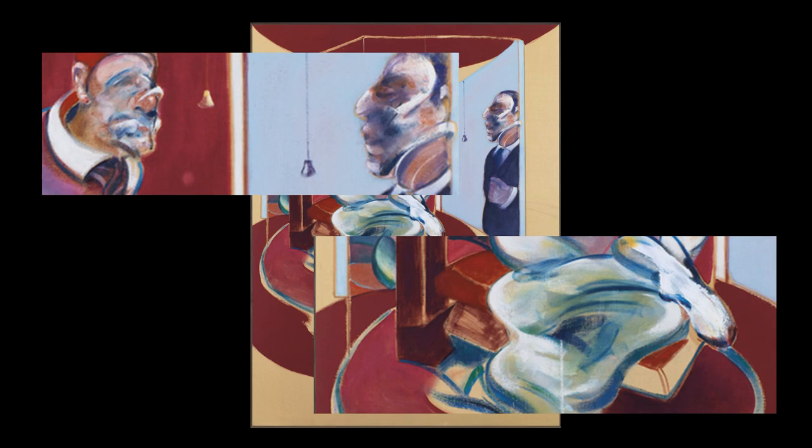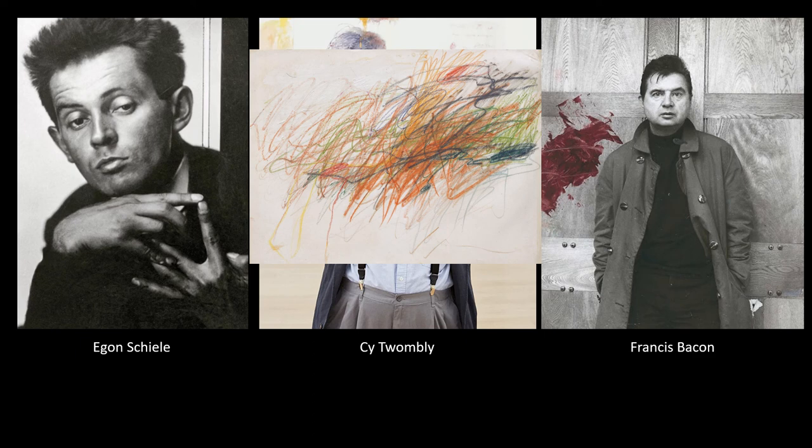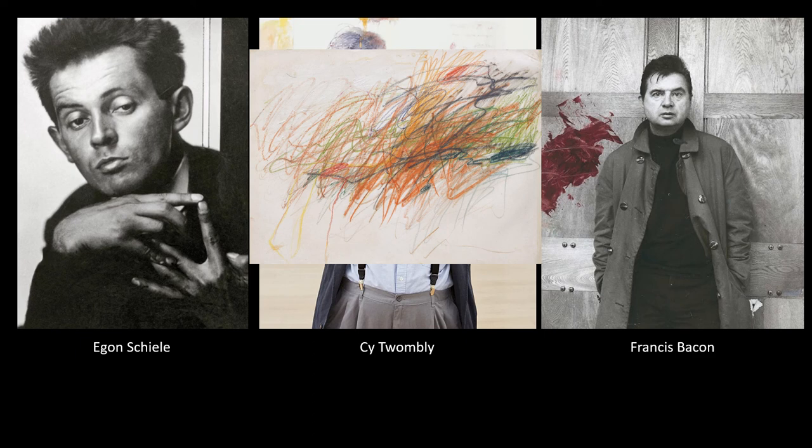Francis Bacon also layers his paint to build up depth to his characters. So, what have we learnt? We now know all three artists managed to convey strong emotion in different ways: Cy Twombly mainly through colour, Egon Schiele through facial features, and Francis Bacon by distorting faces. How will you use media to show emotion?